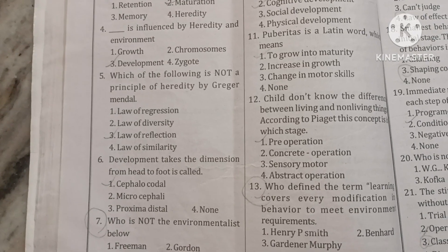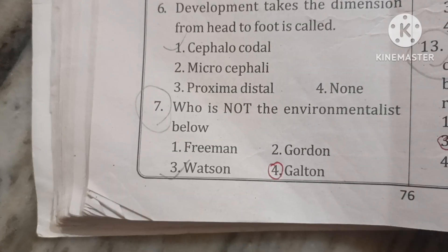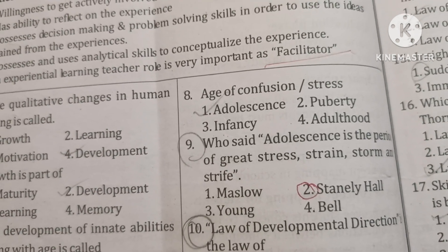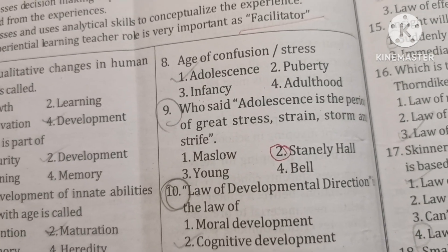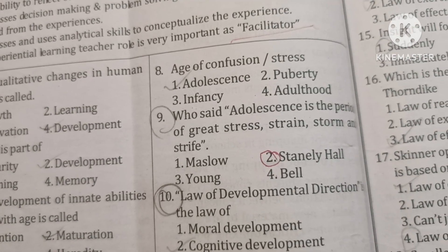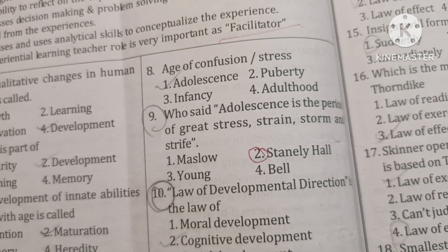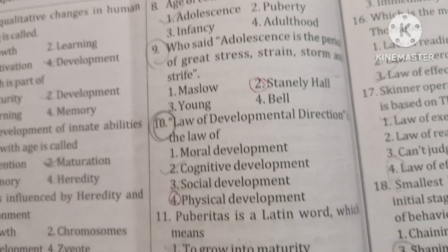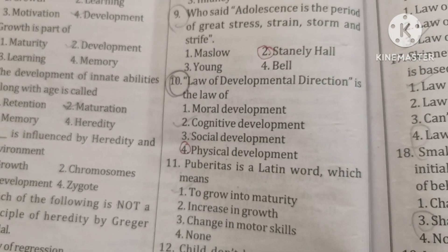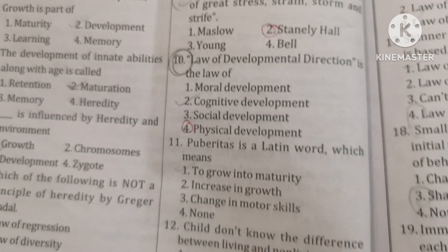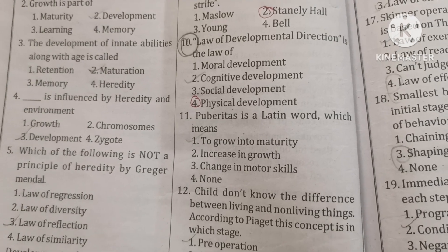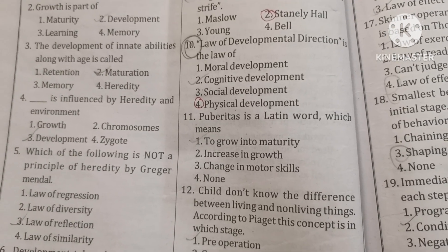Development takes the dimension from head to foot, called cephalocaudal. Who is not the environmentalist? Galton. Age of confusion or stress — adolescence. Who said adolescence is the period of great stress, strain, storm and strife? Said by Stanley Hall. Law of Developmental Direction is the law of physical development. Pubertus is a Latin word which means to grow into maturity.